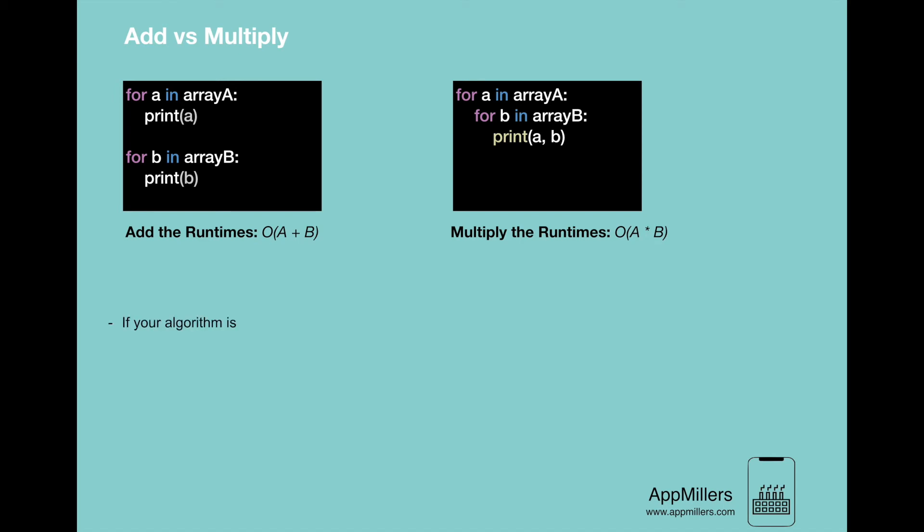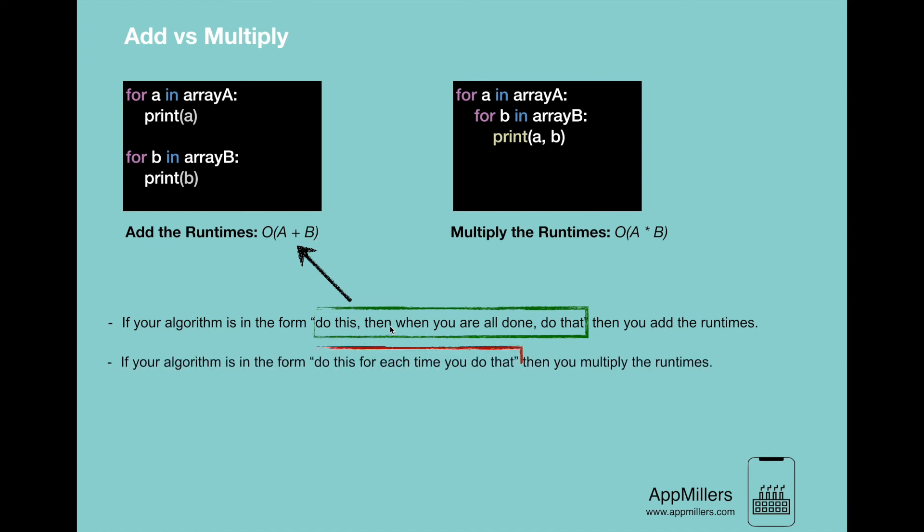In other words, if your algorithm is in the form 'do this, then when you are all done, do that,' then you add the runtimes. But if your algorithm is in the form 'do this for each time you do that,' then you multiply the runtimes.